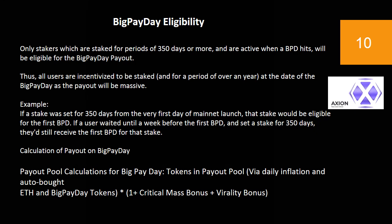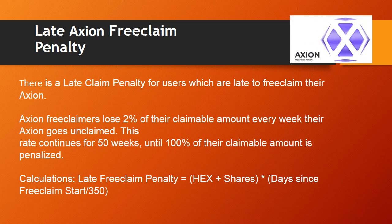Calculation of payout on Big Pay Day. Payout pool calculations for Big Pay Day include tokens in the payout pool via daily inflation and auto-bought ETH, and Big Pay Day tokens multiplied by (1 + critical mass bonus + virality bonus). Late Axion Free Claim Penalty: there is a late claim penalty for users who are late to free claim their Axion. Free claimers lose 2% of their claimable amount every week their Axion goes unclaimed. This rate continues for 50 weeks until 100% of their claimable amount is penalized. Calculation: late free claim penalty = HEX shares × (days since free claim start / 350).